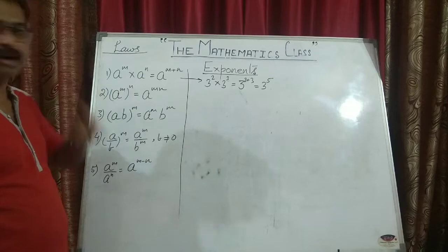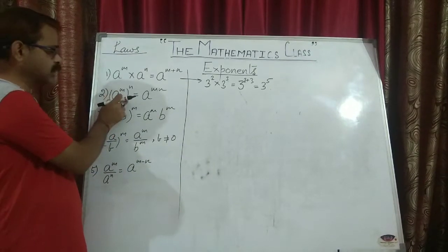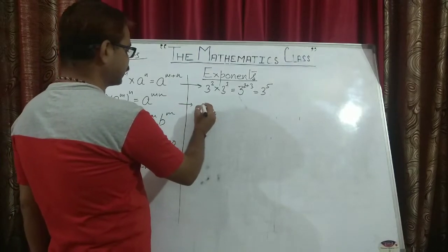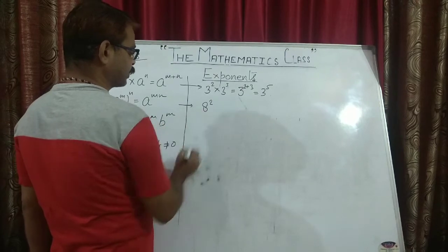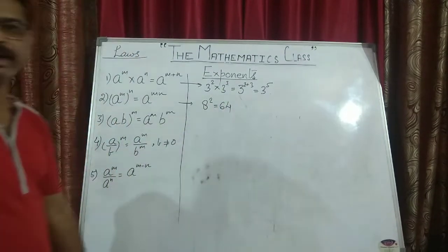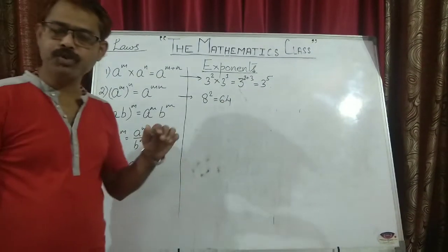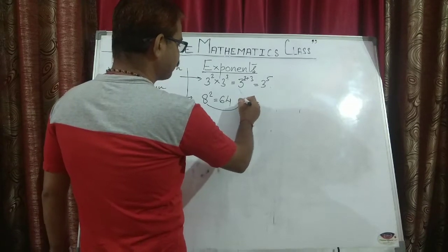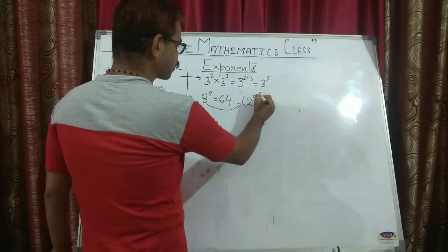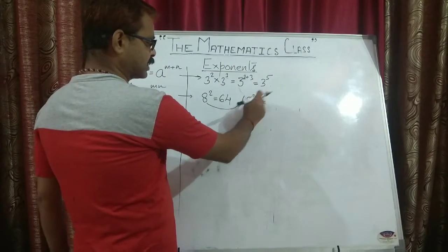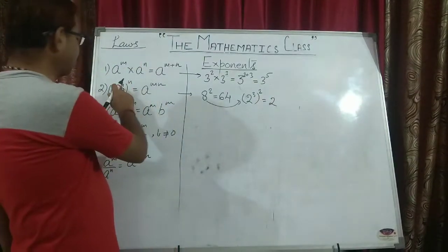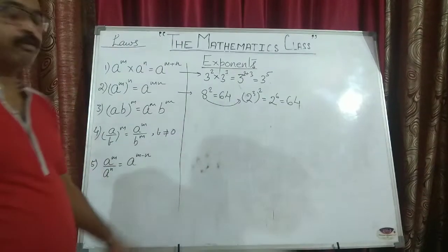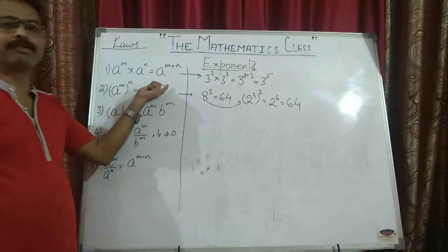Next is: a to the power m, whole to the power n. When there is a base with a power and again the whole exponent has a power, these two powers multiply. For example, 8 squared — we know 8 squared is 64. I can write 8 as 2 to the power 3, and since it was squared, that becomes 2 to the power 3 whole squared. According to the law, powers multiply: 2 to the power 6, and 2 to the power 6 is also 64. So if it is a to the power m and again whole to the power n, then powers are multiplied.